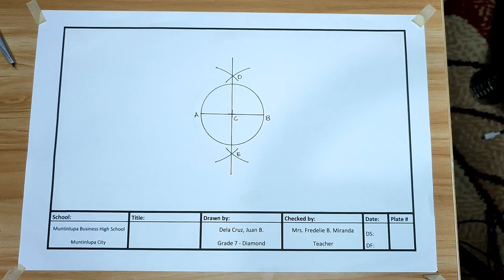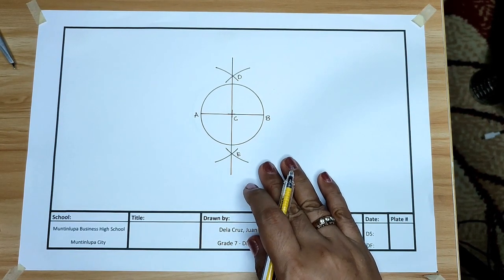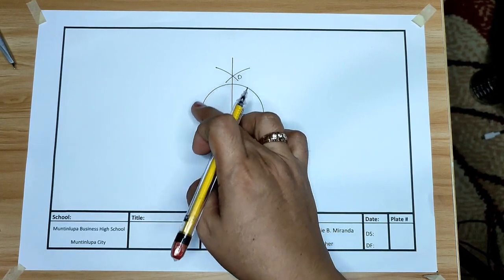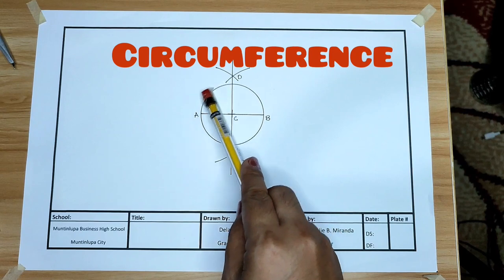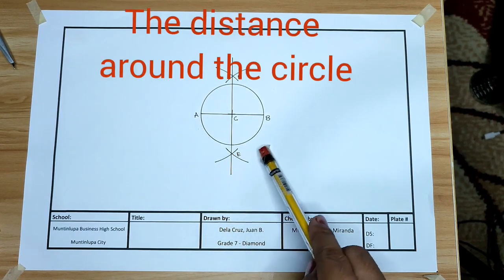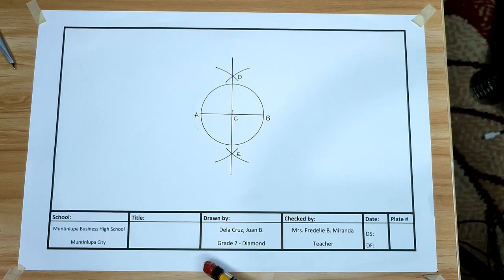How did you find the activity? It is easiest, isn't it? Let us proceed to the parts of the circle. Here in our drawing, this is the circumference. The distance around the circle. That is circumference.